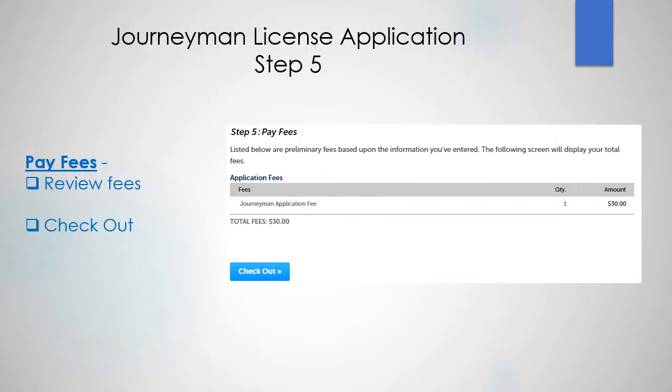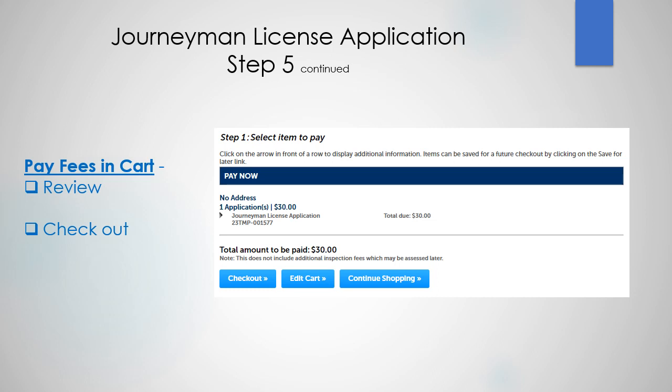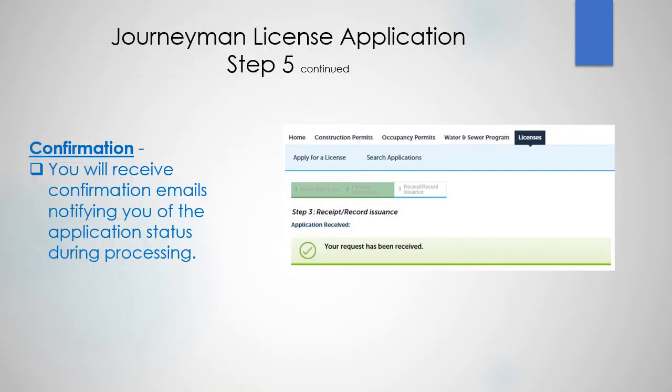Step 5 has to do with paying your fees. Let's review those fees and then check out. Take a look at what's in your cart — is it correct? Review it, check it out, edit it, or continue shopping. Finally, you will receive confirmation emails notifying you of the application status during processing. And that's it. Thank you for watching.